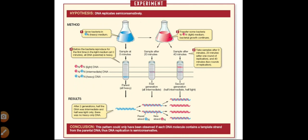DNA replication follows the semi-conservative method of replication, which was experimentally proved by Meselson and Stahl, two scientists belonging to the California Institute of Technology. They conducted an experiment to demonstrate and prove that DNA replication must be semi-conservative.